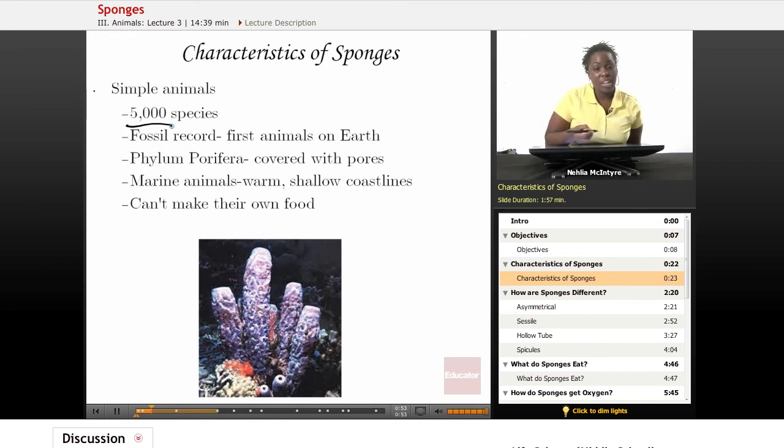According to the fossil record, it does show that sponges were the first animals here on Earth. And they belong to what we call the phylum or division, phylum Porifera. And that's because Porifera actually means that this organism is covered with pores. So that word pores kind of looks like or sounds like the first part of the word Porifera. And pores are just little small holes or openings that are found all over the sponge body.